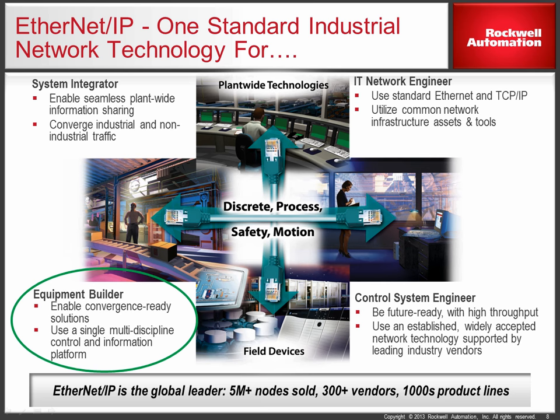CIP itself is actually network independent. CIP is the common application layer protocol for multiple networks including EtherNet/IP, CompoNet, ControlNet, and DeviceNet. Because of this, it enables seamless bridging through these different networks.